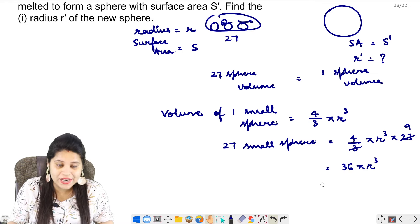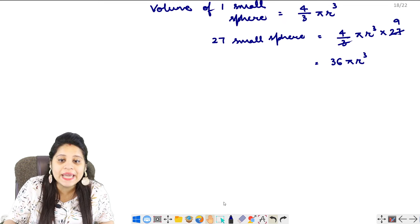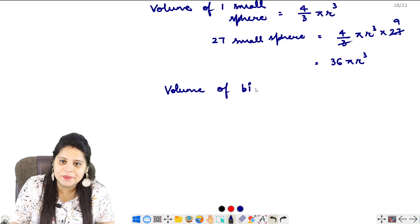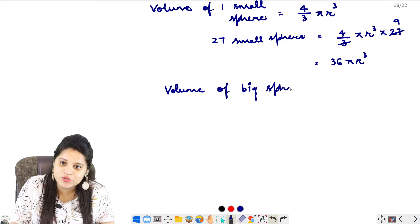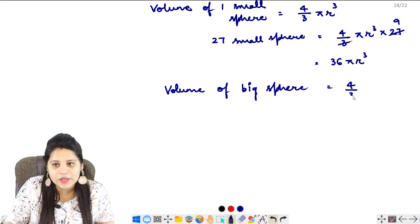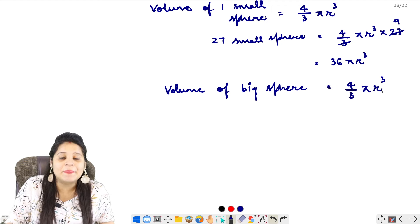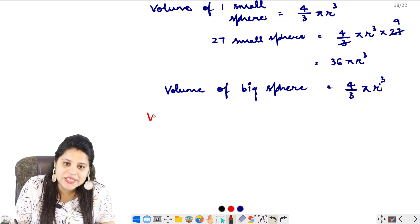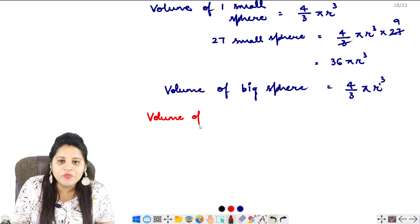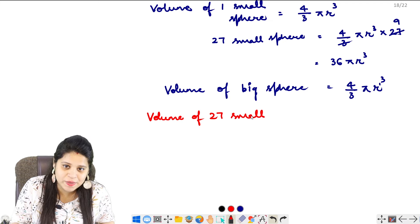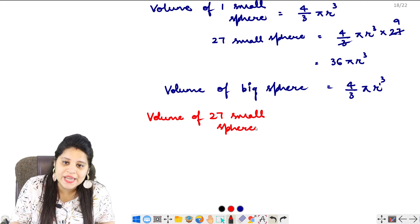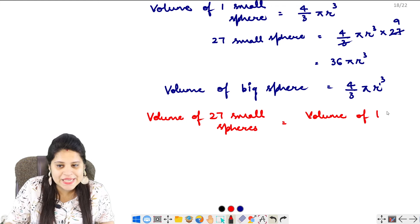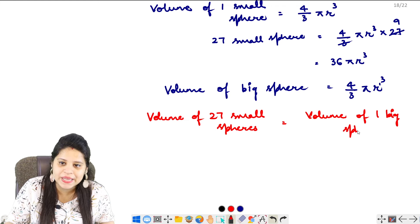Now, the volume of the big sphere - the formula is the same - 4 upon 3 pi r dash cube. We know that the volume of 27 small spheres equals the volume of one big sphere.